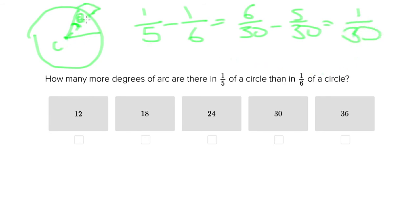So this area here is one-thirtieth of the entire area of the circle and this length here is one-thirtieth of the entire length of the circumference of the circle.